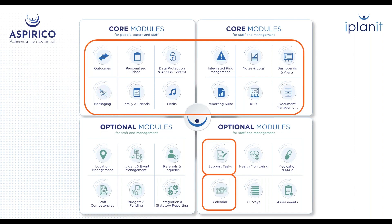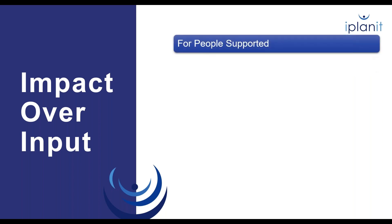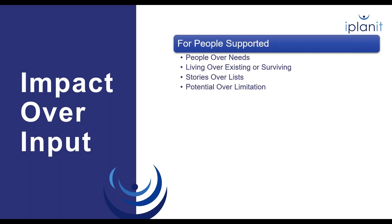Just before I get into the system, it's worth explaining that we built iPlanet around the person rather than the service, which is why it's used in a very diverse range of settings — learning disability services, autism services, physical disability services, as well as older people services. What we're trying to achieve, and what we've got a lot of recognition for, is moving the dial away from a time and task approach and starting to measure impact over inputs. So what are we achieving rather than a list of tasks? For service users, if we focus on impact we put the person at the heart of their care, not just the needs that we've assessed — that's just basically existing.